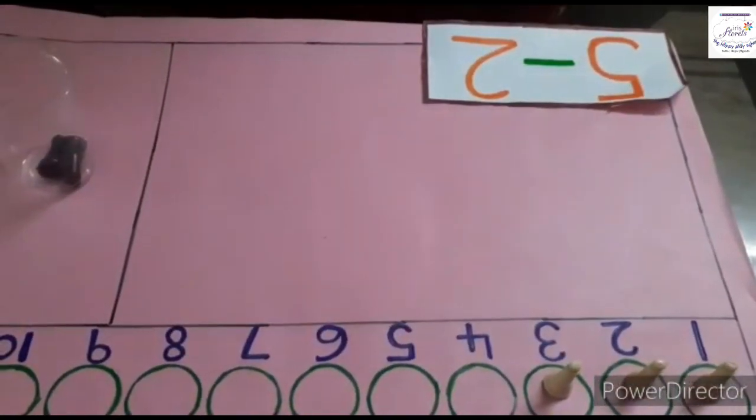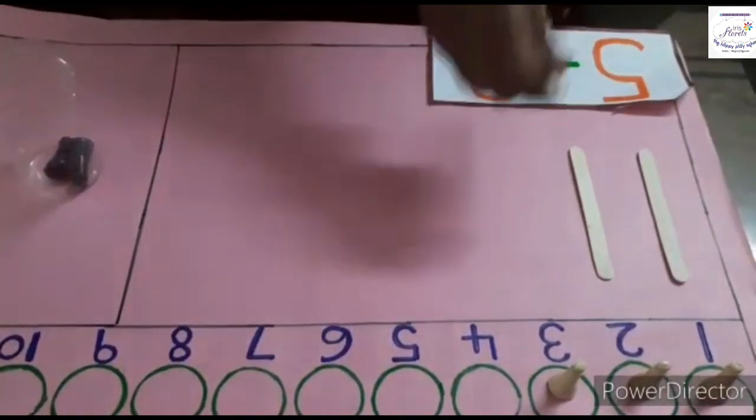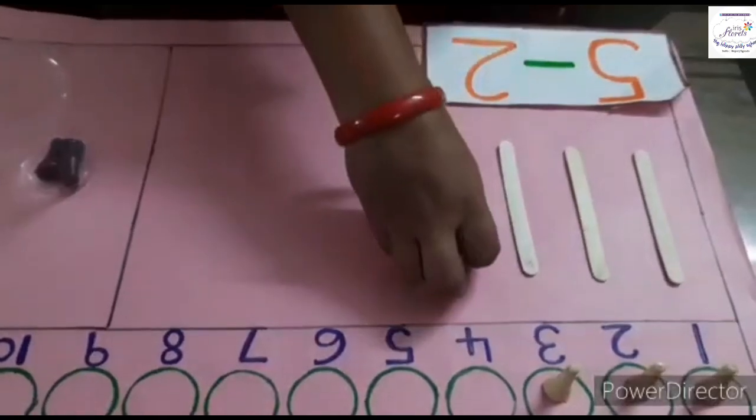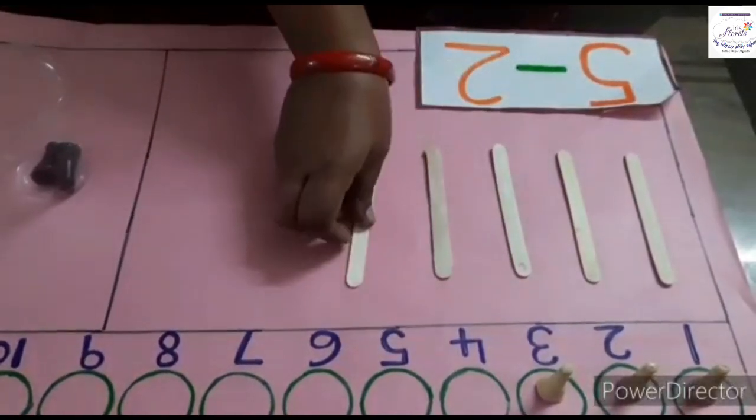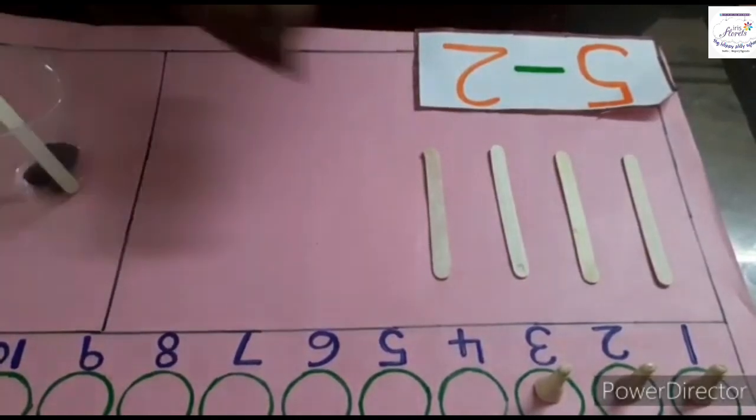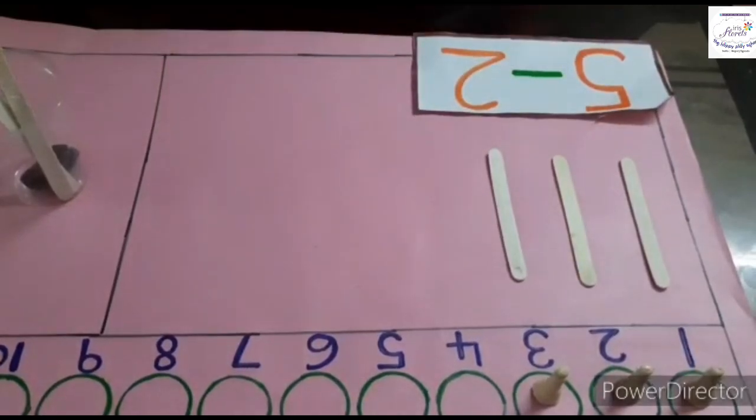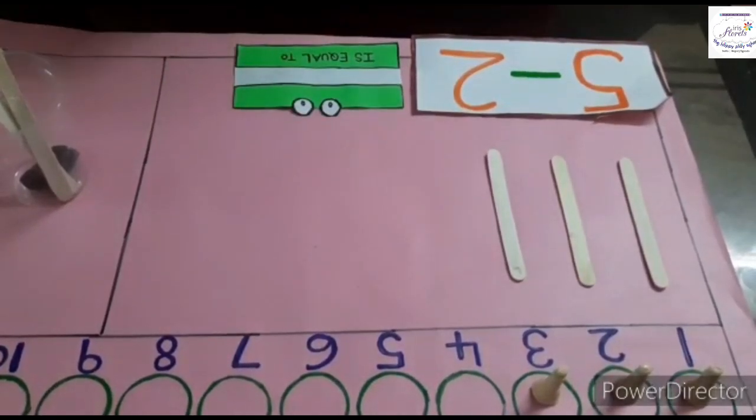I will explain with help of ice cream sticks now: 1, 2, 3, 4, and 5. 5 minus 2 means I am removing 2: 1 and 2. How many are left over? 1, 2, 3. So 5 minus 2 equals 3.